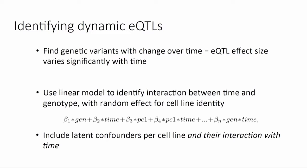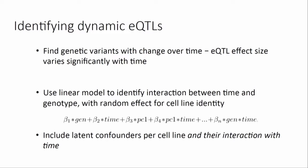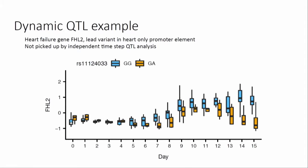To look into this, we collected a dynamic data set where we're actually looking at a cellular differentiation time course over time. We took iPSCs — the experimental work is done in the Galad lab in Chicago — using iPSC lines for 19 of the Yoruba HapMap individuals. For each one of these separately, we differentiated them towards cardiomyocytes. Every day during this differentiation over 16 days, we collect RNA sequencing, and the HapMap individuals are genotyped. We looked for genetic variants whose eQTL effect size varies significantly during this differentiation time course — what we refer to as dynamic QTLs. We used a linear model that identifies an interaction between time point in this differentiation and genotype.